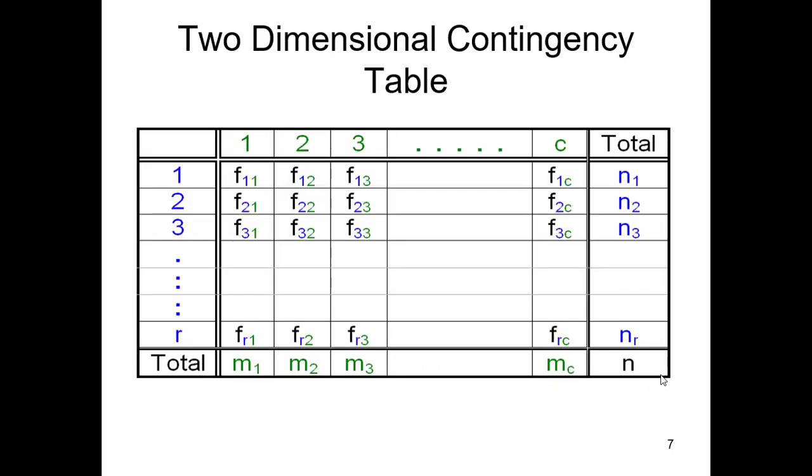So let's look at this. We have a two-dimensional contingency table. We see for the first level of one of the variables, row one column one f_11, row one column two f_12, and so on. We have a very similar situation to what we had with the tests for goodness of fit, just happens to be bigger, just more of this.